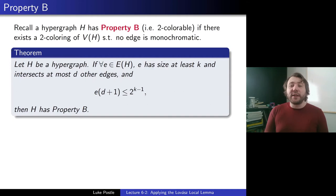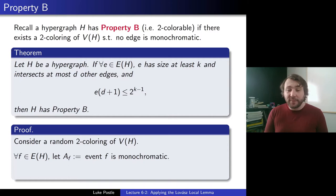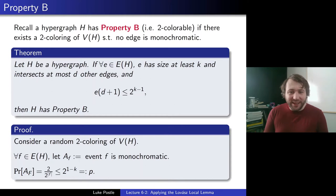So let's proceed to the proof. We consider a random two-coloring of V(H). We want to avoid monochromatic edges. So we let Af be the event that edge f is monochromatic. We note the probability of Af is 2/2^|f|, which since every edge has size at least k is at most 2^(1−k), and we'll define that to be p to use in the Local Lemma. So there are our bad events; we have the probability; we have to discuss their dependencies.